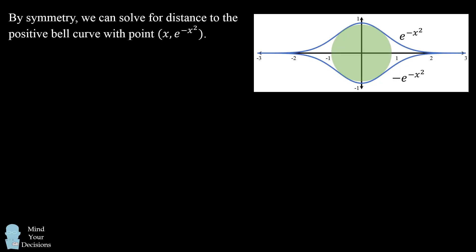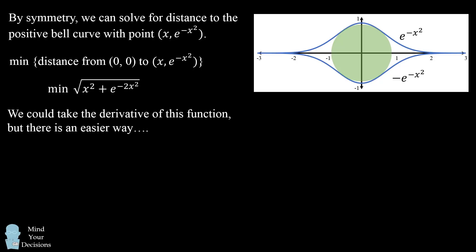By symmetry, we can solve for the distance to the positive bell curve with point x, e to the power of negative x squared. So we want to minimize the distance from the origin to the positive bell curve, and we can use the distance formula to get the following expression. But before we continue our calculations, before we take the derivative and solve for when it's equal to zero, there's actually an easier way to solve this problem.